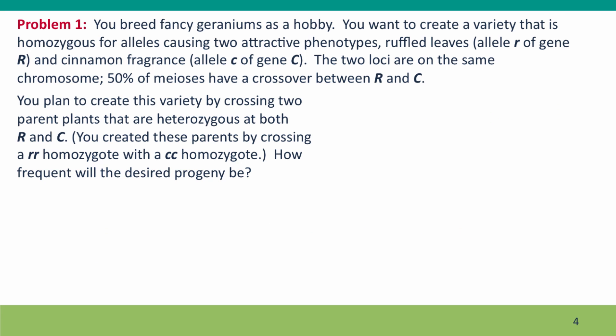So here's our problem. You're breeding fancy geraniums as a hobby. You want to create a variety that's homozygous for two recessive alleles. One is allele little r of gene R, which controls ruffled leaves. The other is allele little c of gene C, which controls a cinnamon-like fragrance. And these two loci are on the same chromosome. And you're told that 50% of meioses have a crossover between the R and C genes.